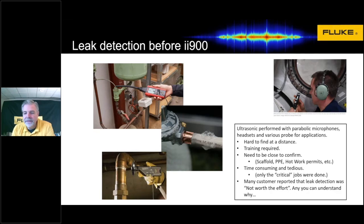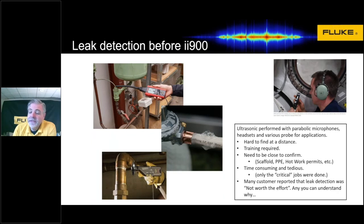By the way, if you take a look at the picture there, this is Chris Cassidy. He's a NASA astronaut and he was using an ultrasound leak detector with a set of headphones on the space station, the ISS, to try to find a leak — and hopefully he found it.